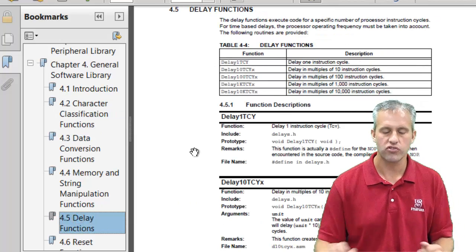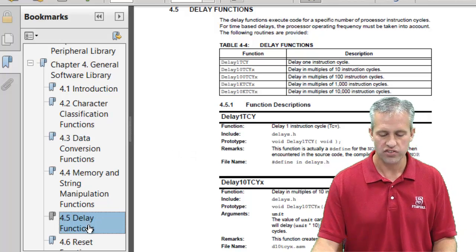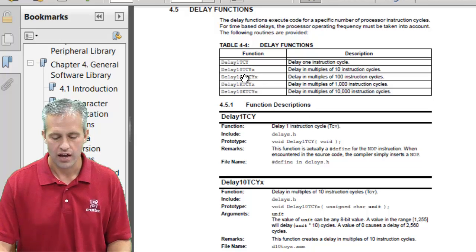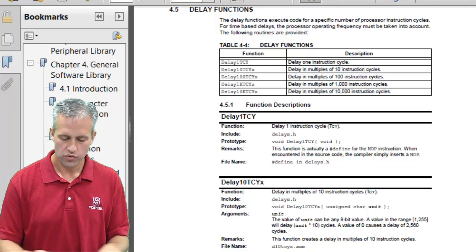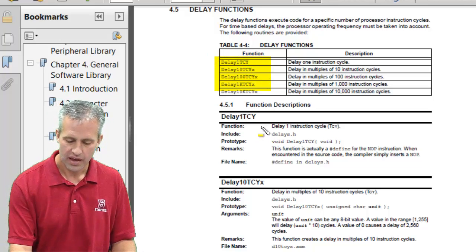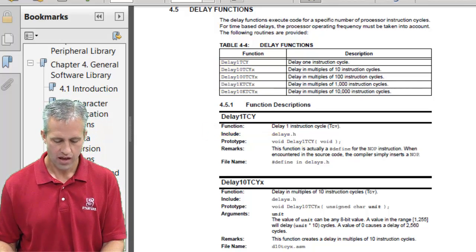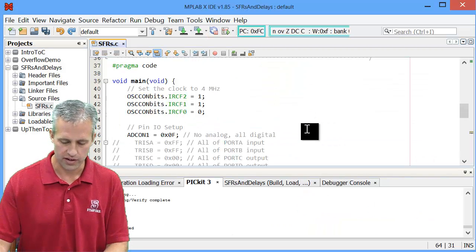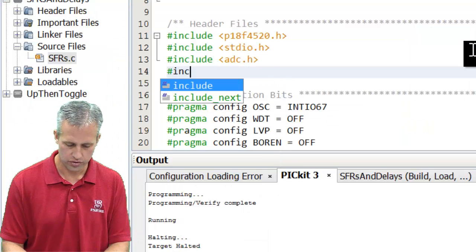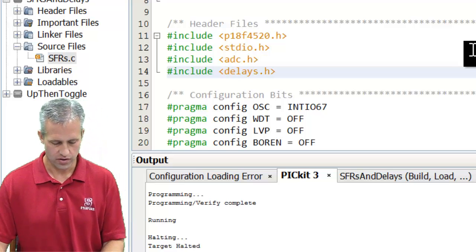The section that I'm interested in today is chapter four, which is the general software libraries, section five. It's on page 146 if you don't have it open in the reader. And it tells you about these functions. So there are five functions that you can use. In order to use these functions, you need to include a library called delays.h. So let's go ahead and do that just so that we don't forget later. Forgetting the include happens all the time. So pound include delays.h. All right, so there you go.